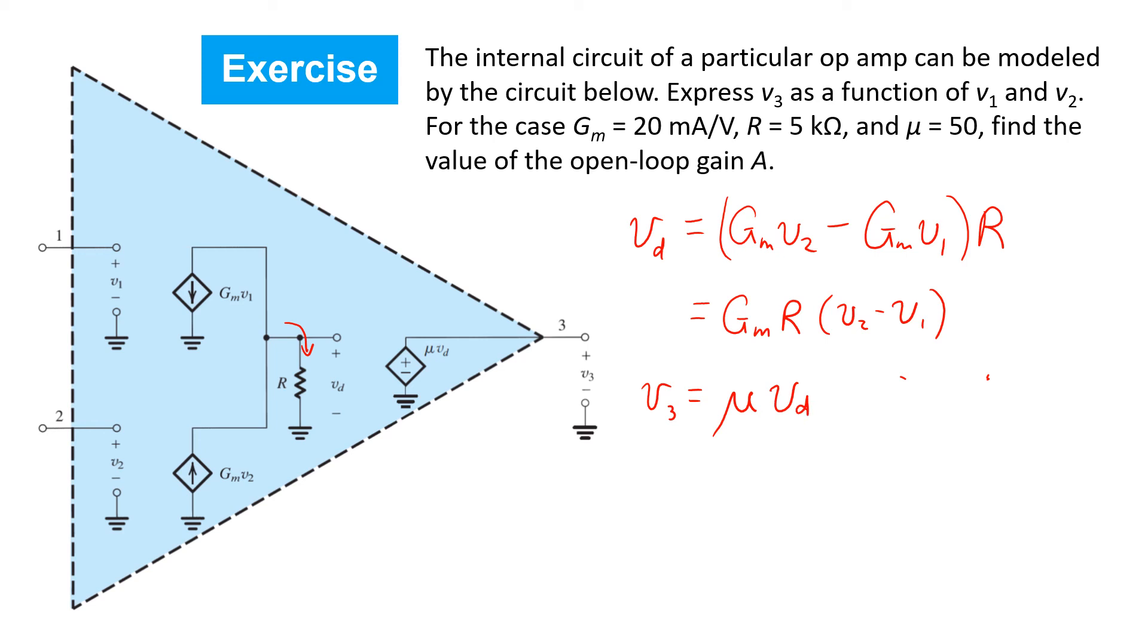Finally, we see that the output voltage v3 is equal to a gain mu times vd. Substituting in our expression for vd from above, you get the final gain expression: mu gm r times (v2 minus v1). So first we'll note that this output voltage is purely a function of the differential input voltage vid. It doesn't depend on the common mode input.